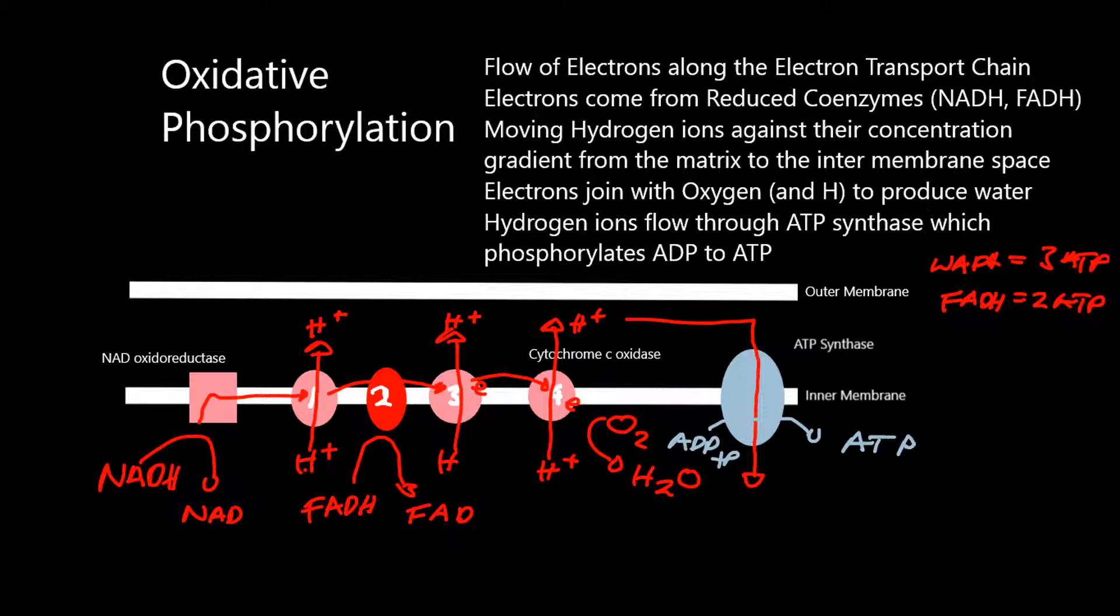The electrons that have moved along the electron transport chain eventually join with oxygen and hydrogen to produce water, and those hydrogen ions that you've moved across from the matrix flow out through ATP synthase, and that generates ATP.